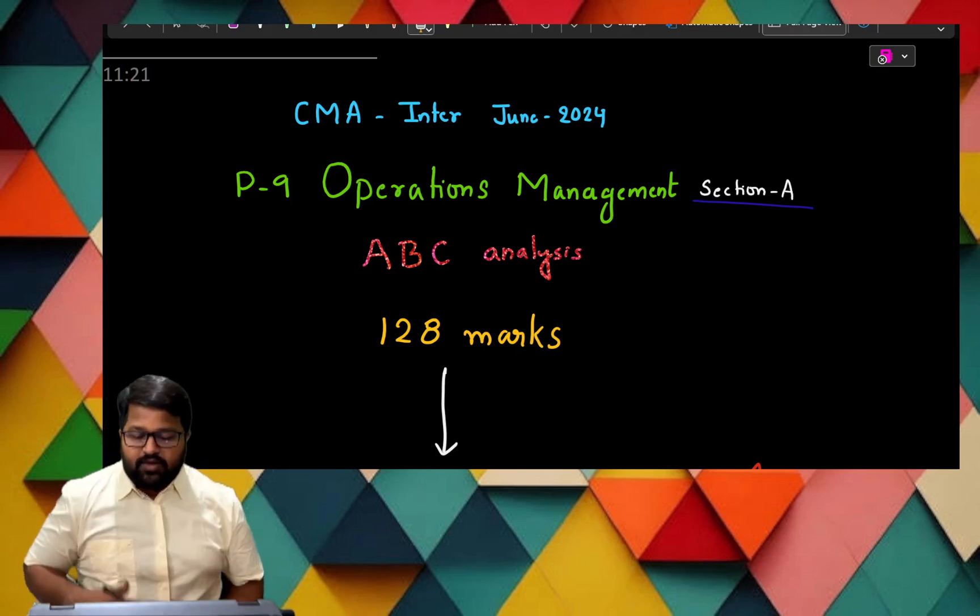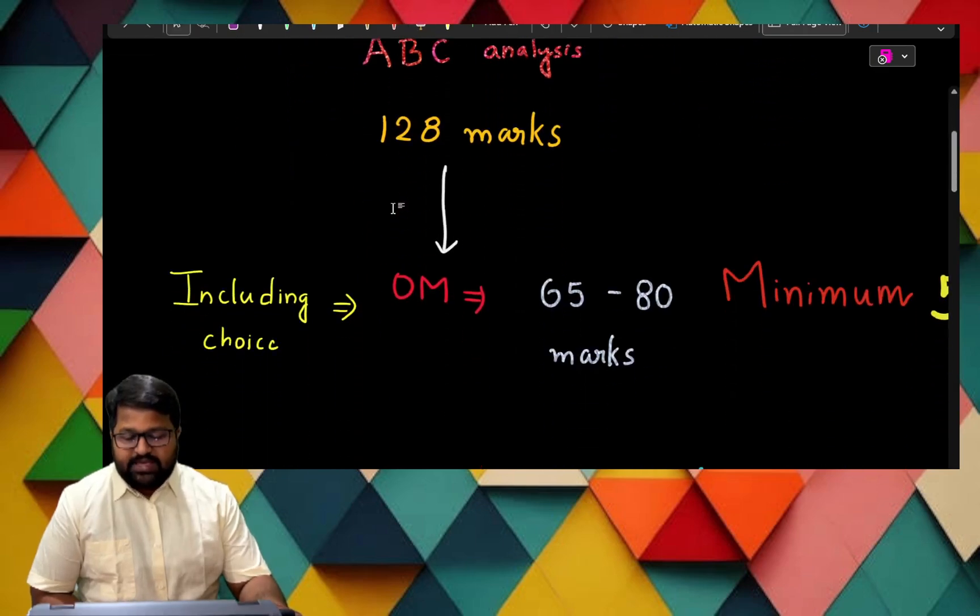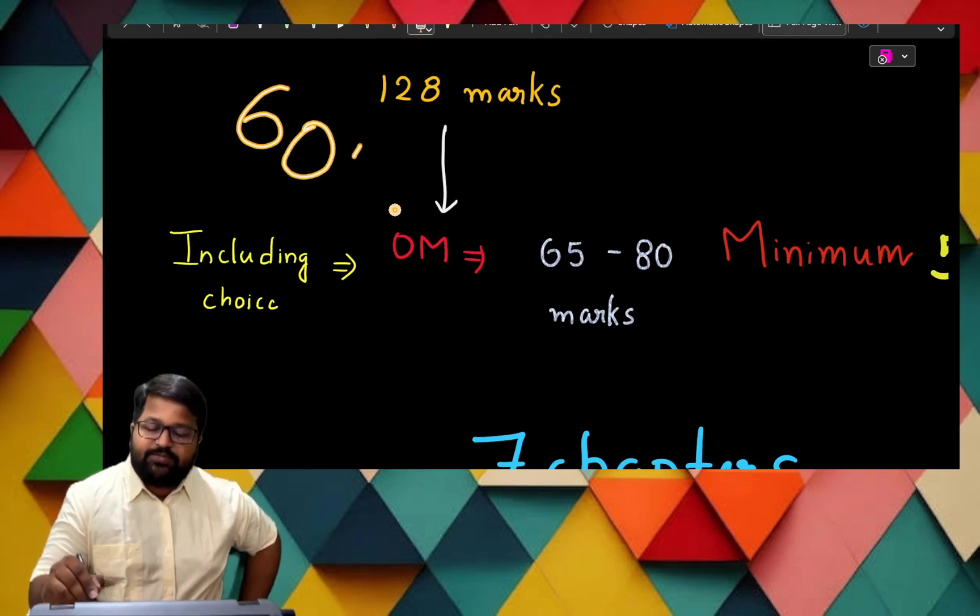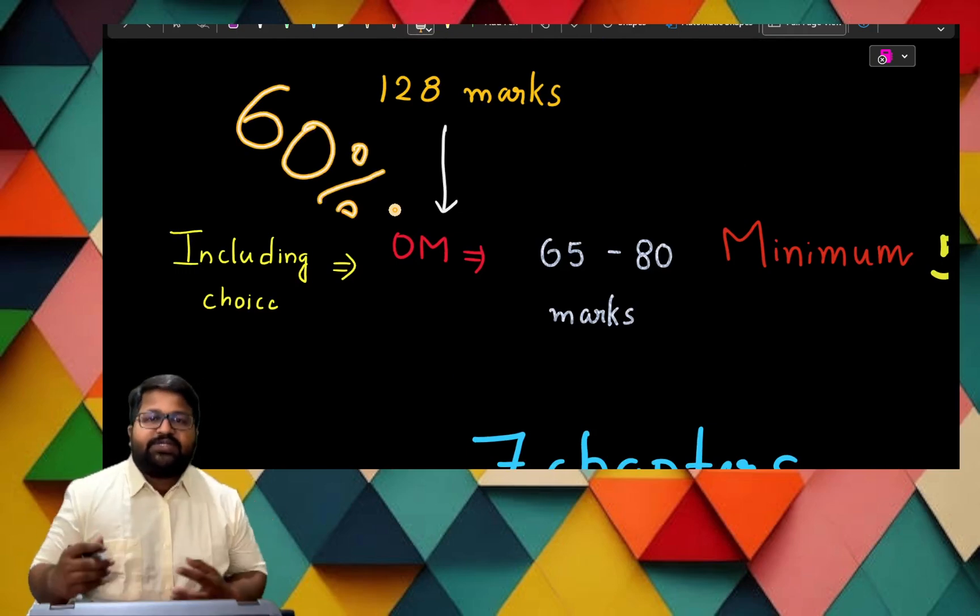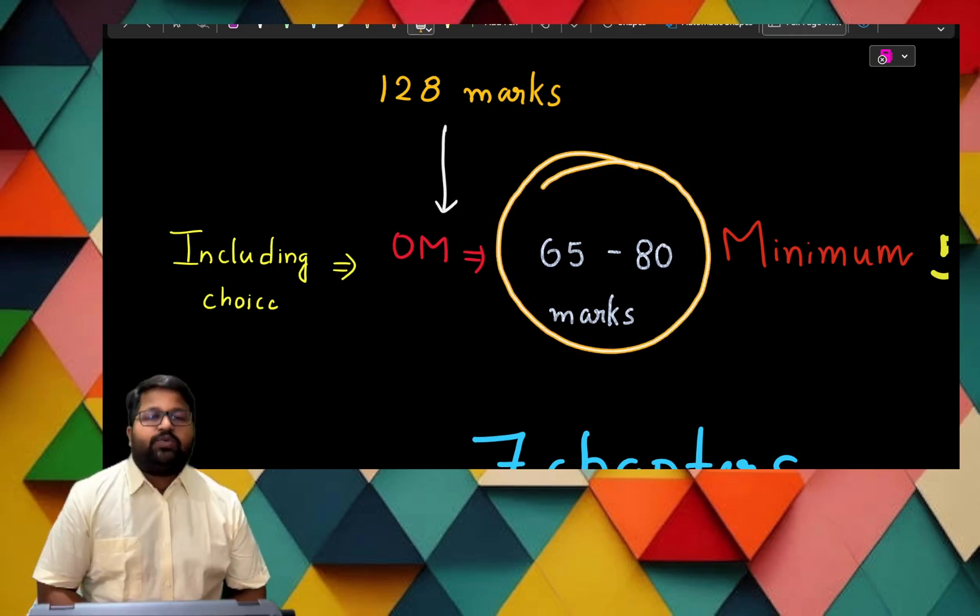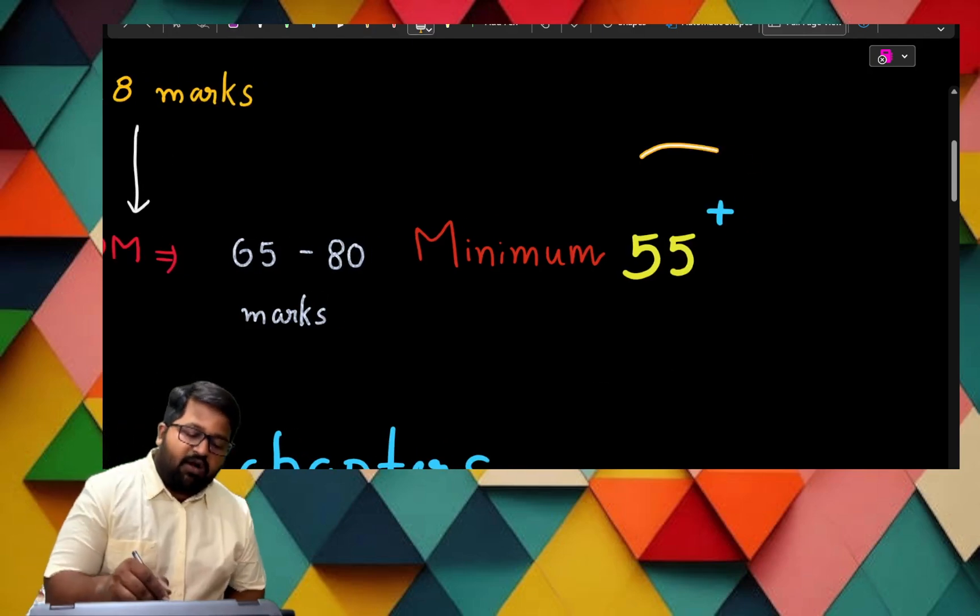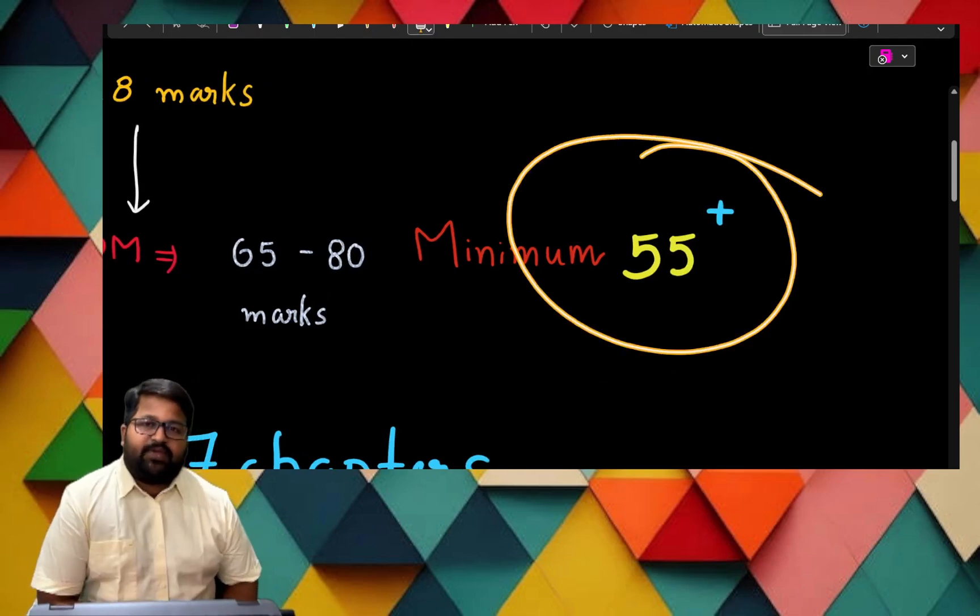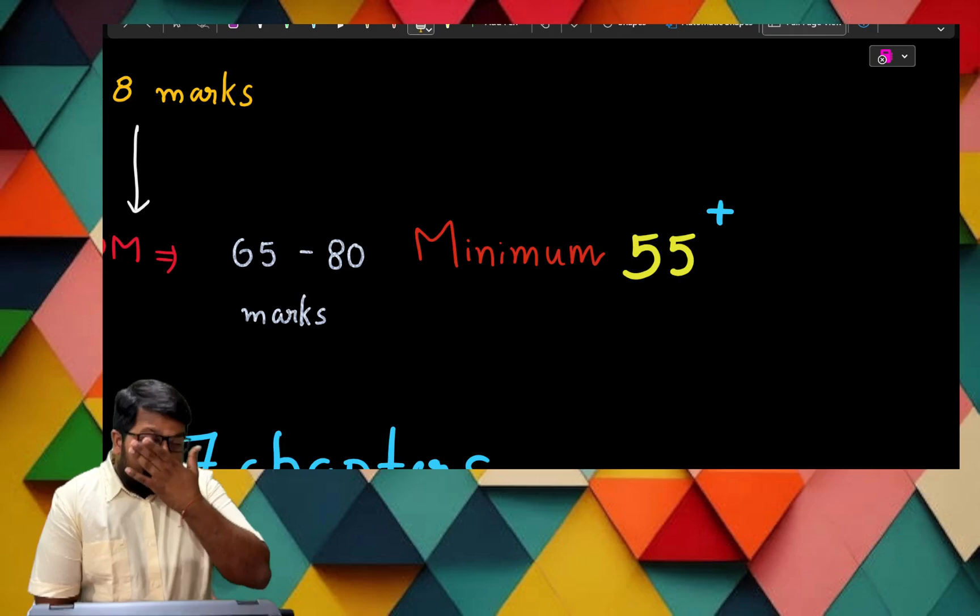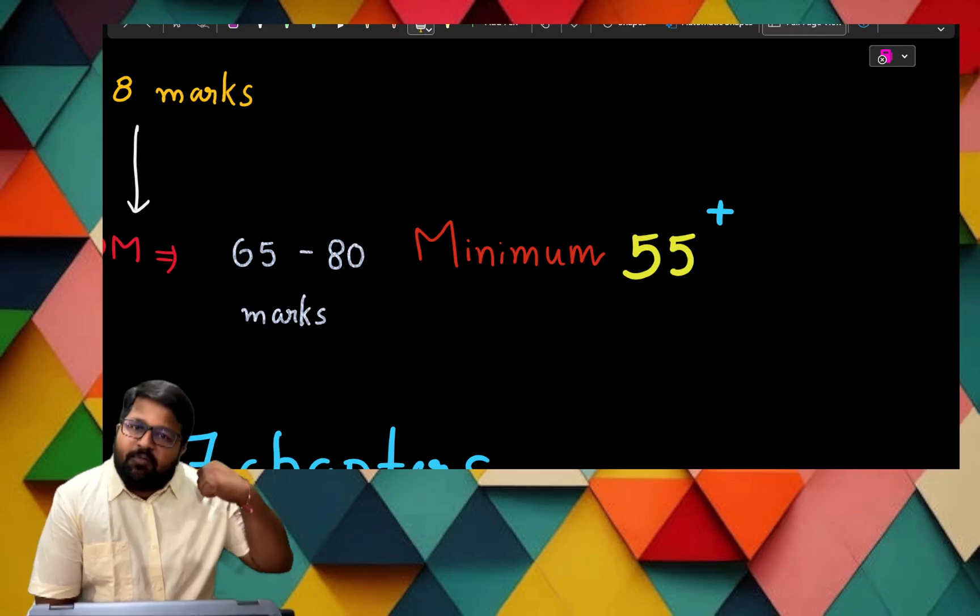Totally we are having 128 marks. Of that, as per our ICMA norms, they gave a weightage of 60 percent. So marks for OM are 65 to 70 marks. Of that, I am giving a minimum guarantee of 55 plus. If you are following my strategy twice, you will get this 55 plus. But if you are in a position to follow it more than twice, then for sure more than 55 plus is guaranteed.